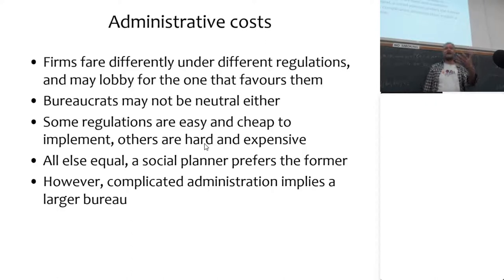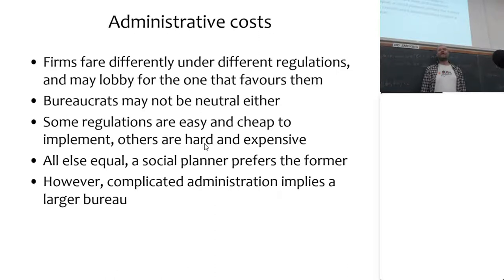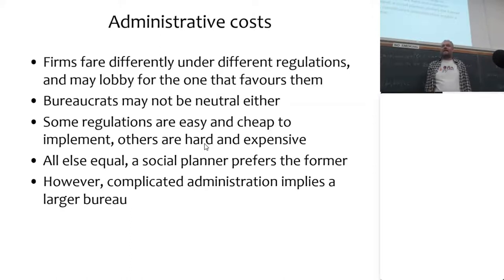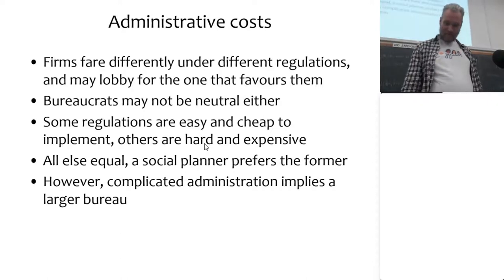But if you believe Niskanen's model of how bureaucracies work, what Niskanen says is that bureaucrats are after maximizing their desk size — their incentive is to get promotion, have other bureaucrats working for them, and have a larger budget. That means bureaucrats want to make things as complicated as possible, because that means more people will work for them on implementing this complicated program.